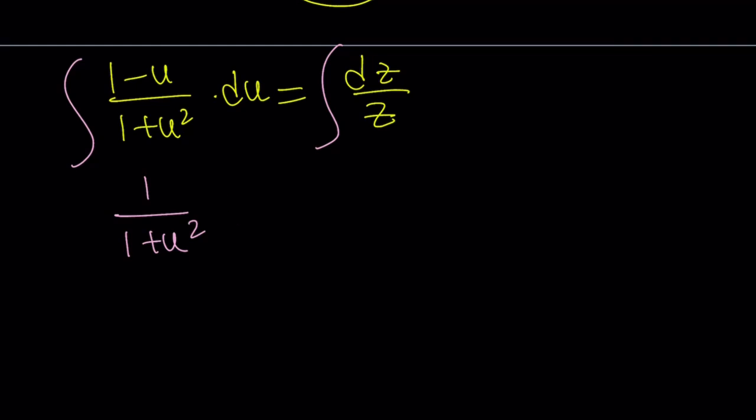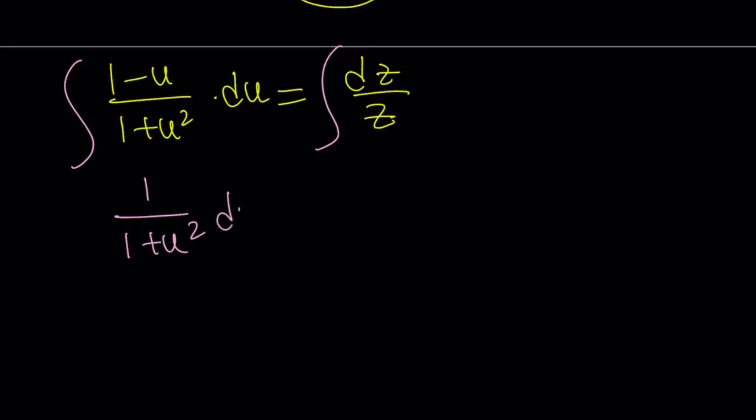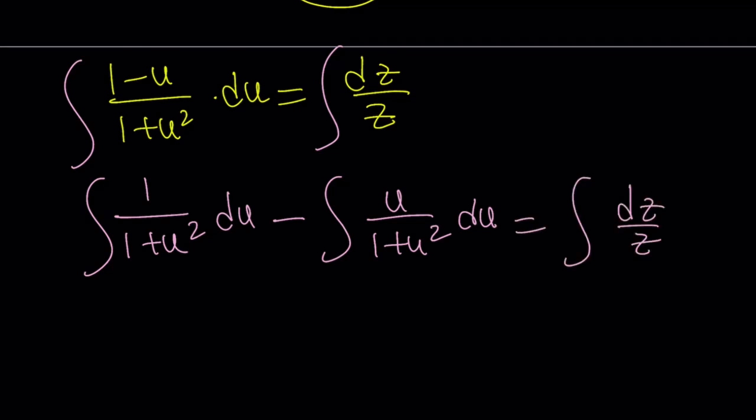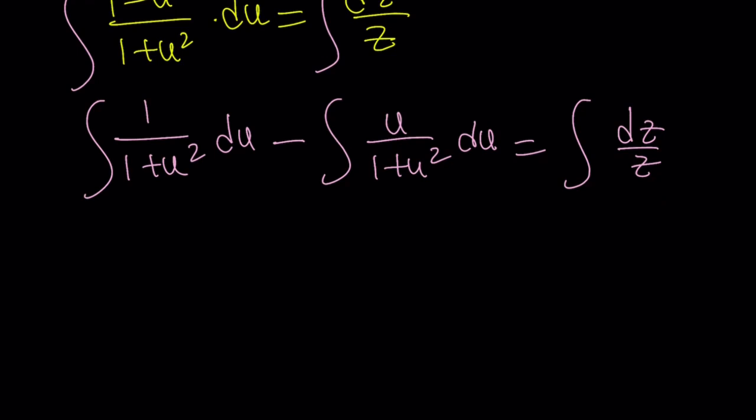Now, how do you integrate when you separate them? I'll probably just use another integral symbol for this one. So, I'm going to write it as integral of 1 over 1 plus u squared du. That's a du. And then, minus u over 1 plus u squared du. And that is equal to integral of dz over z. Okay. Now, notice that the very first integral on the left-hand side is the inverse tangent or the arc tangent. So, I'm going to write the integral of that as tan inverse of u.